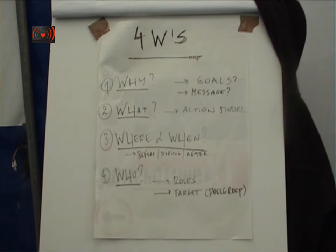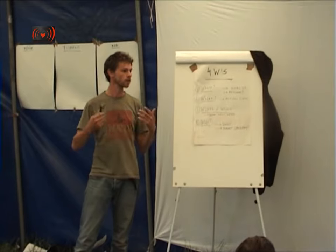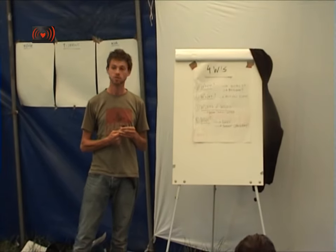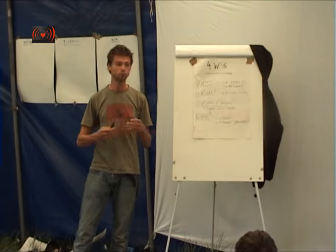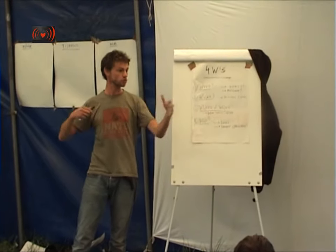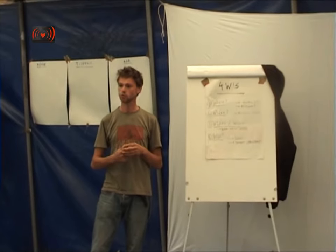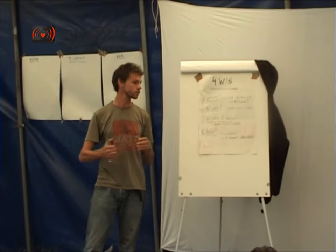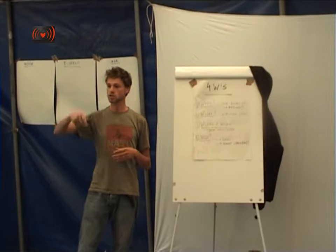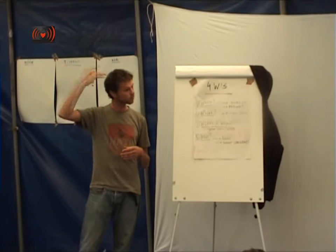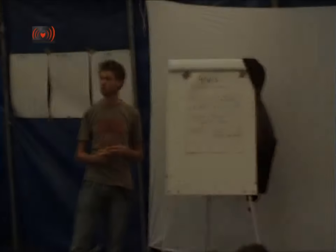What kind of action do we want to do? Maybe to help you think of what kinds of actions there are, we can do a small two-minute brainstorm where you just shout action models you can think of — all kinds of actions you know or have participated in — so we have a list of action models in mind that we can later choose from.